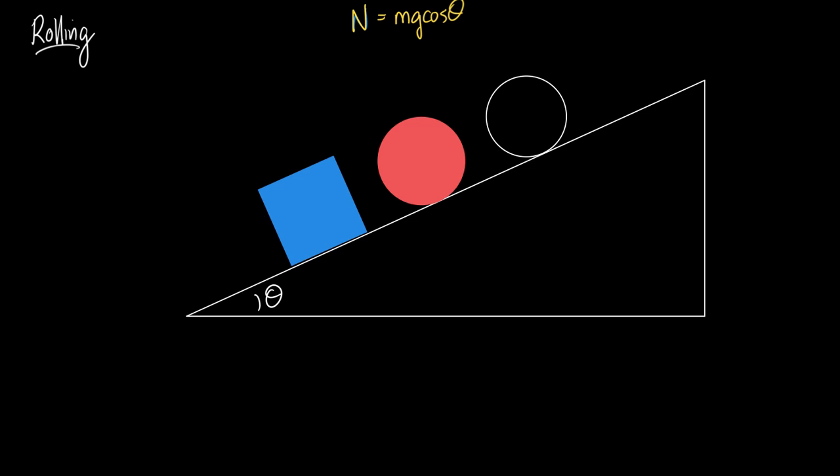Now, let's say the disc and the ring are rolling and the block is stationary. I'm saying that because that would require us to talk about the static frictional force. Something that is rolling, by definition, has a point that is instantaneously at rest with respect to the surface. That is the definition of rolling.